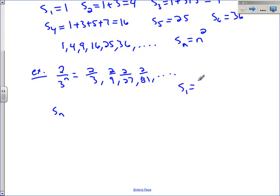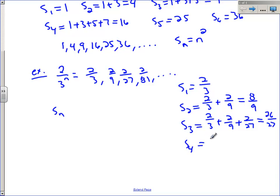S sub 1 is just 2 thirds. S sub 2 is 2 thirds plus 2 ninths, and that works out to be, if you do common denominators, 8 ninths. S sub 3 is the sum of the first three terms: 2 thirds plus 2 ninths plus 2 over 27, and that works out to be 26 over 27. S sub 4 works out to be 80 over 81.